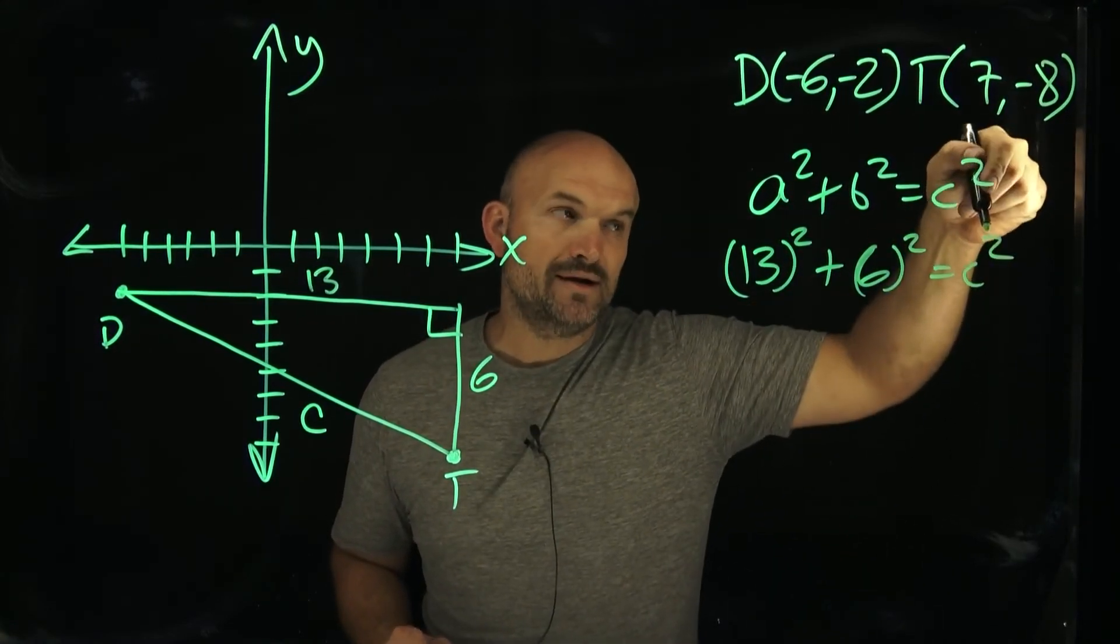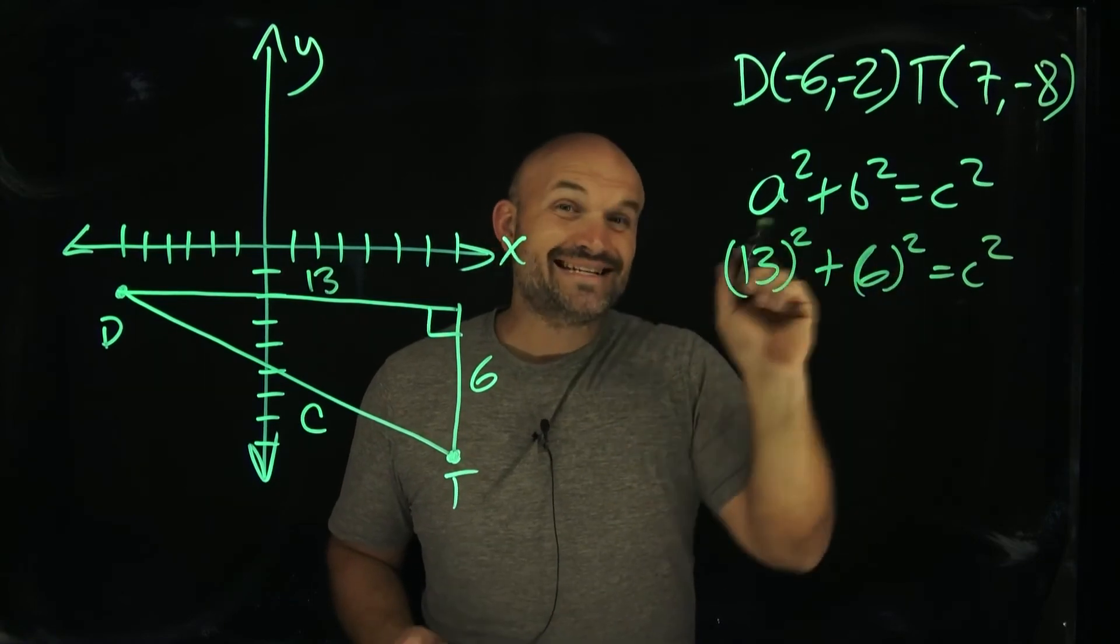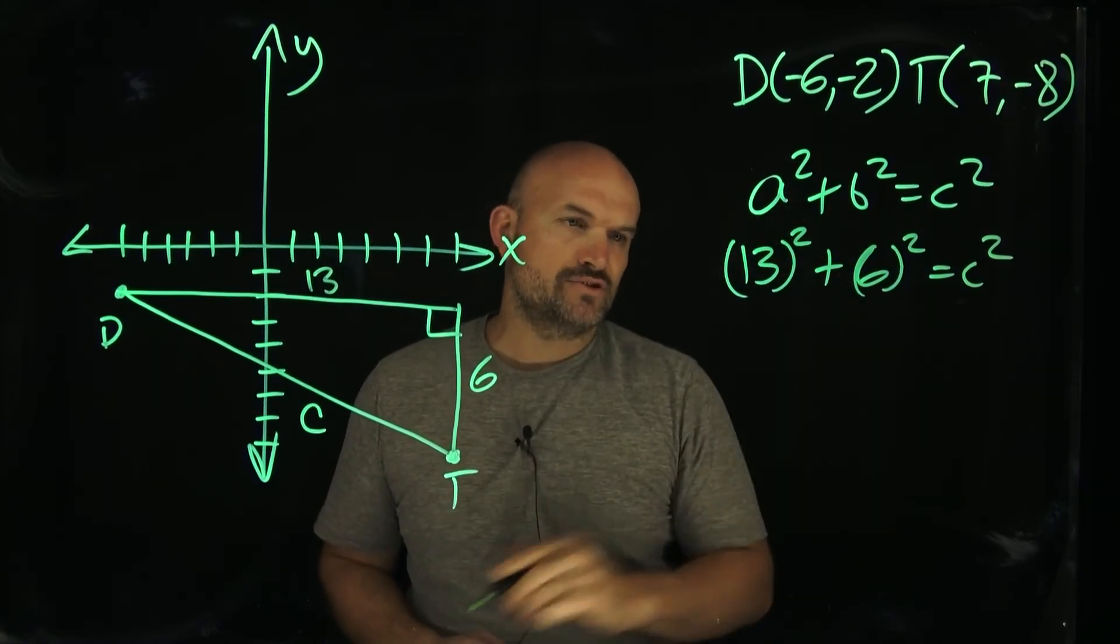Now, a lot of times students will drop the c squared. So be careful with that because again, that is a c squared. So 13 squared is a 169, six squared is going to be a 36.